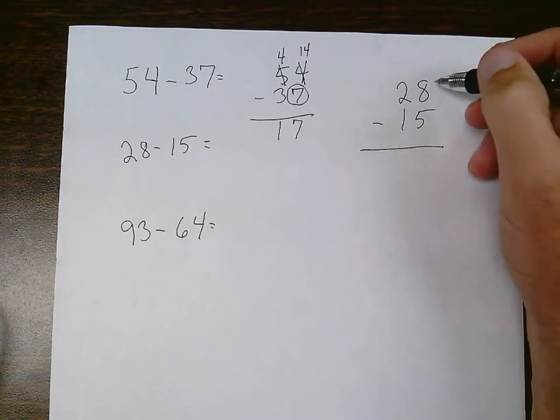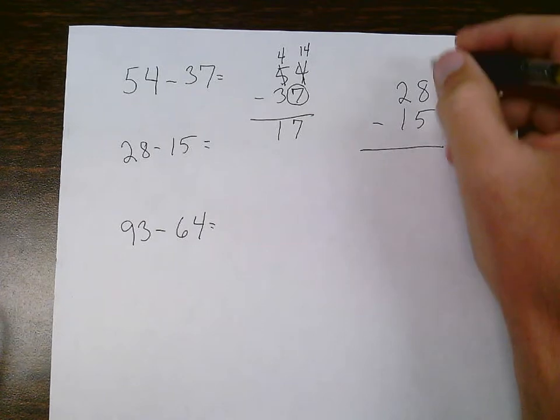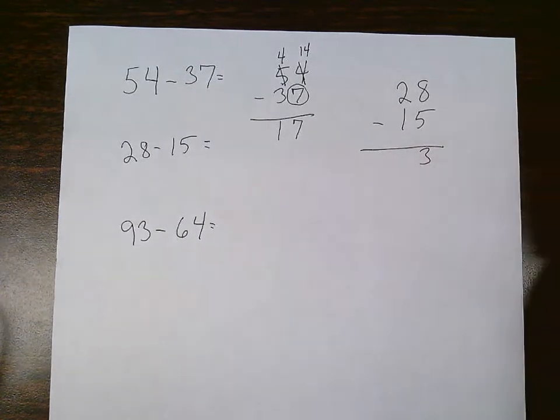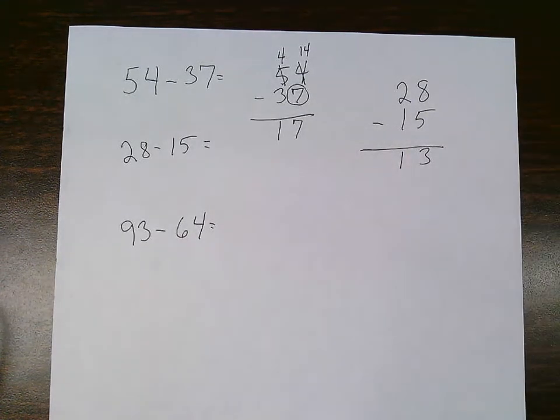If I have 8 cookies, I can give somebody else 5. 8 minus 5 is 3. Done with that column, I move over to the next column. 2 minus 1 is 1. My answer there is 13.